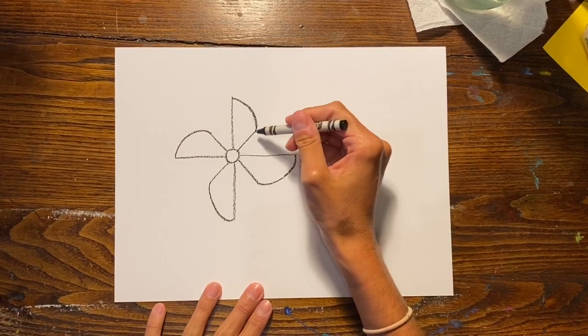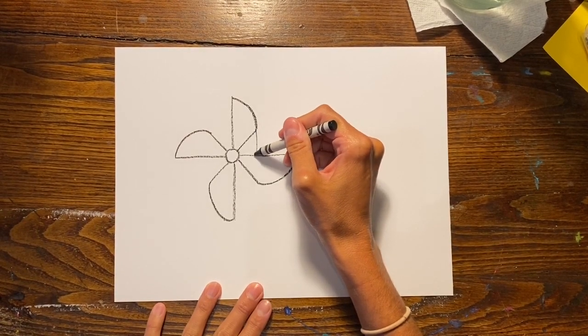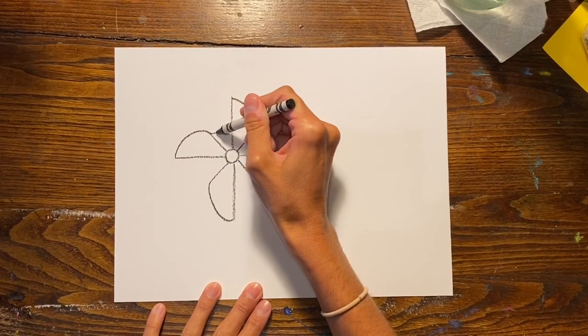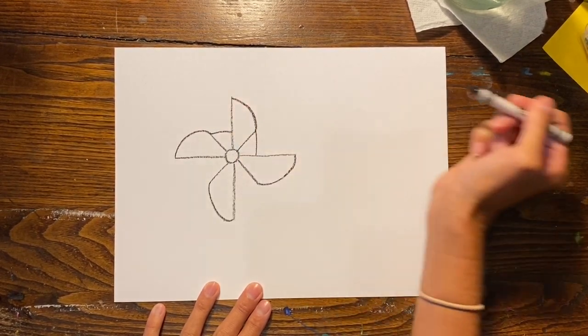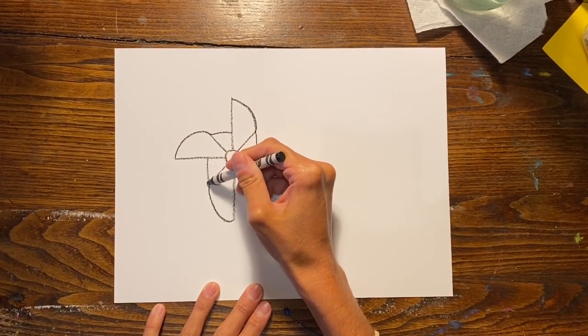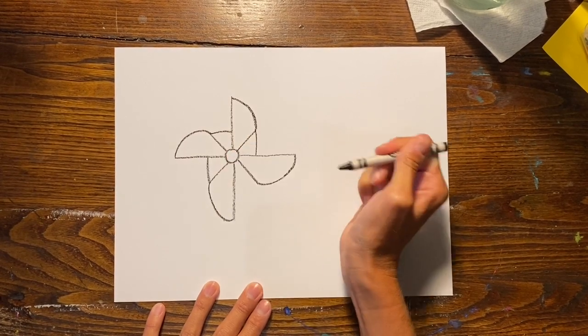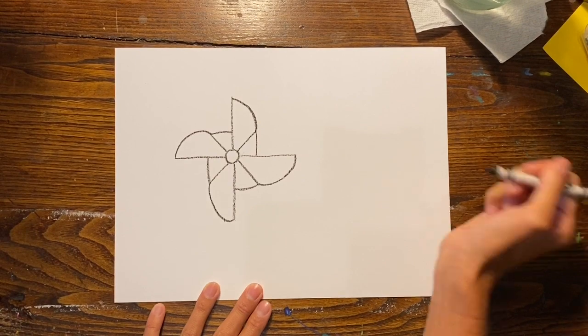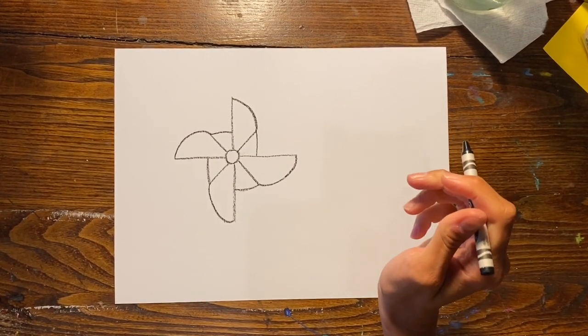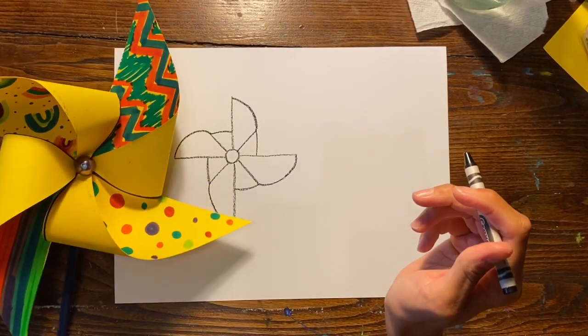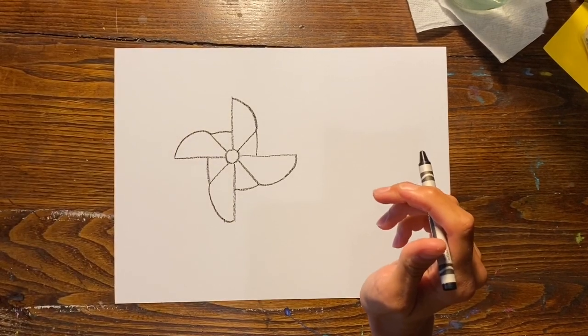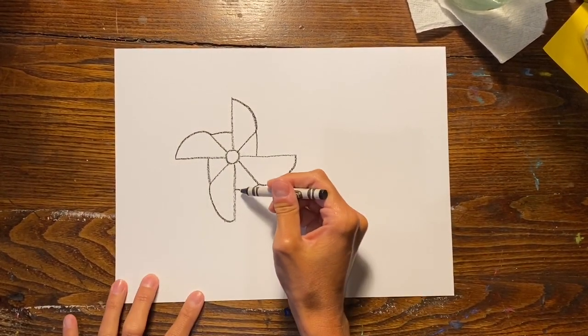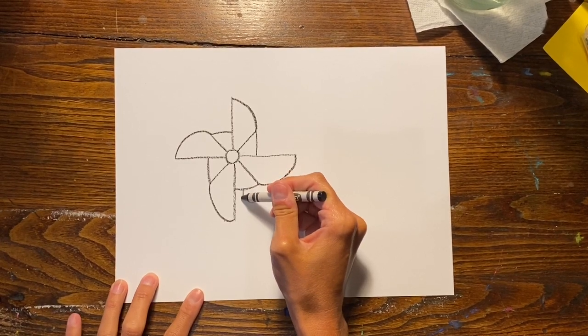Now we're going to be drawing a straight line going from the bottom of that curved line to the other long line that we drew, and you're going to see that this kind of creates a folded over paper look that you would see on a real pinwheel. It kind of creates a box in the background and you see how it matches up with my actual pinwheel and that gives it the folded over paper look.